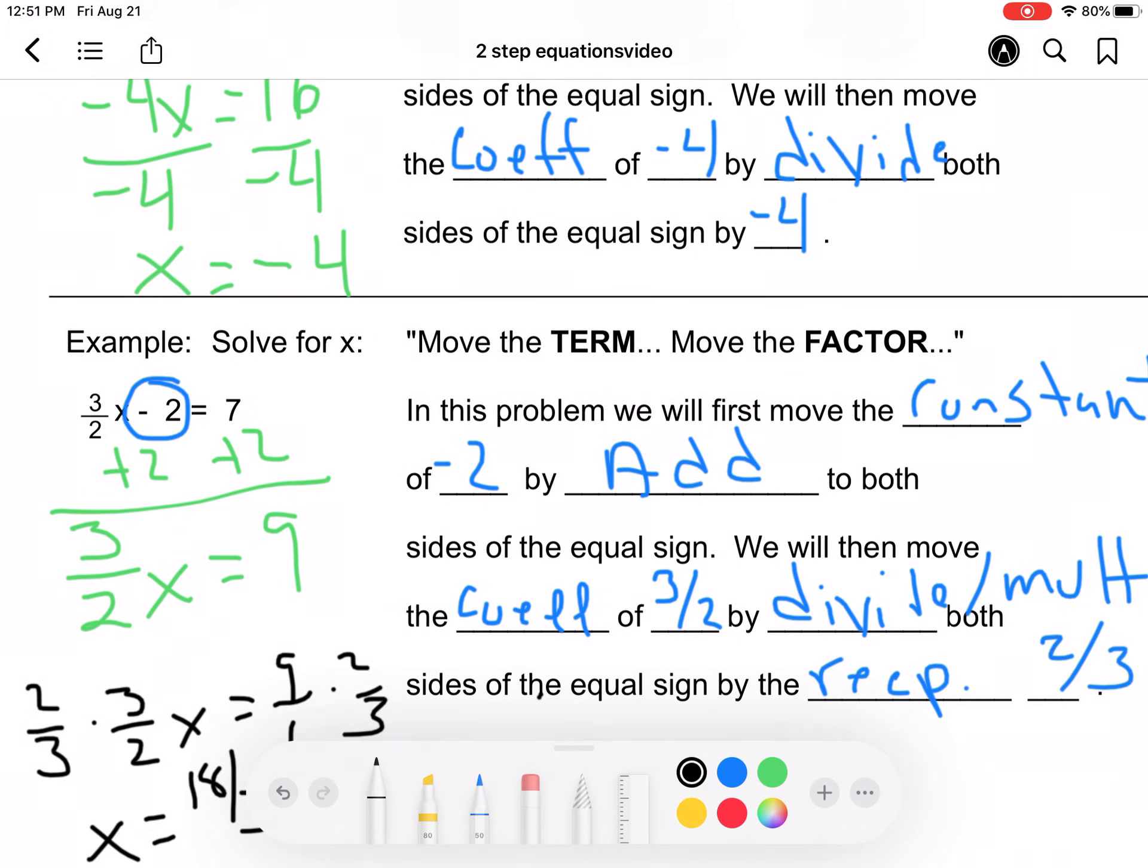And 18 over 3 is the same as, and I'll write it down here, x is equal to 6. And that's simple two-step. If you have any questions, please review this video and continue with the practice problems and be prepared for tomorrow's class.